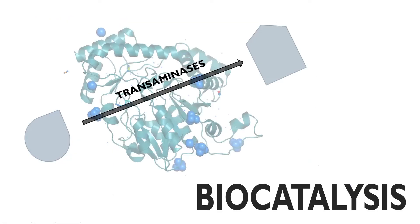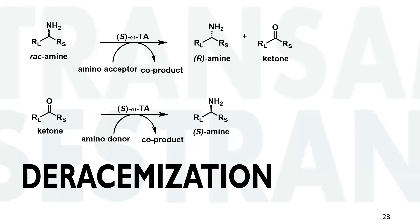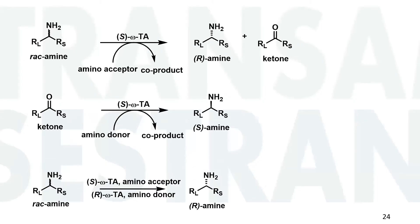So now we know a little about the structural basics — what are transaminases capable of performing? They can perform kinetic resolution, asymmetric synthesis, and deracemization. In all these cases, we can synthesize enantiopure amines, just with different maximum possible yields.